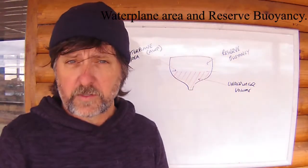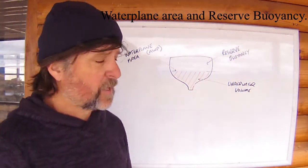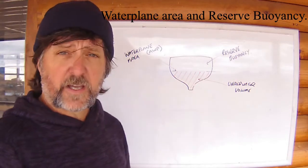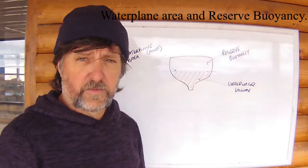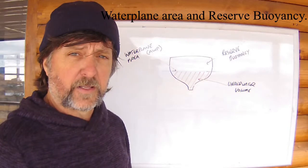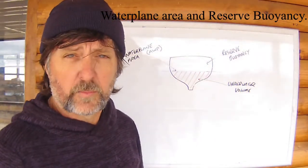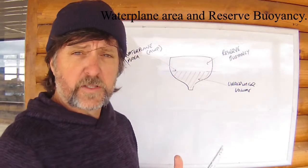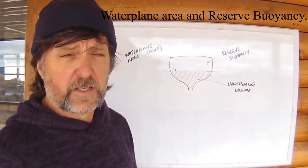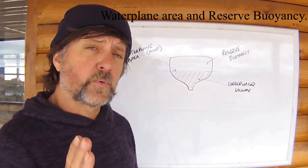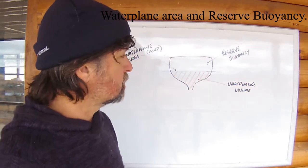Before we head off to the bathtub and ponder Archimedes, let's take one more look at the transverse cross-section of this vessel and get three more concepts out of the way. The first is simply the underwater volume of the hull — the volume inside the submerged section. It has a geometric centre, and that's where the centre of buoyancy is located, which we'll talk about shortly.